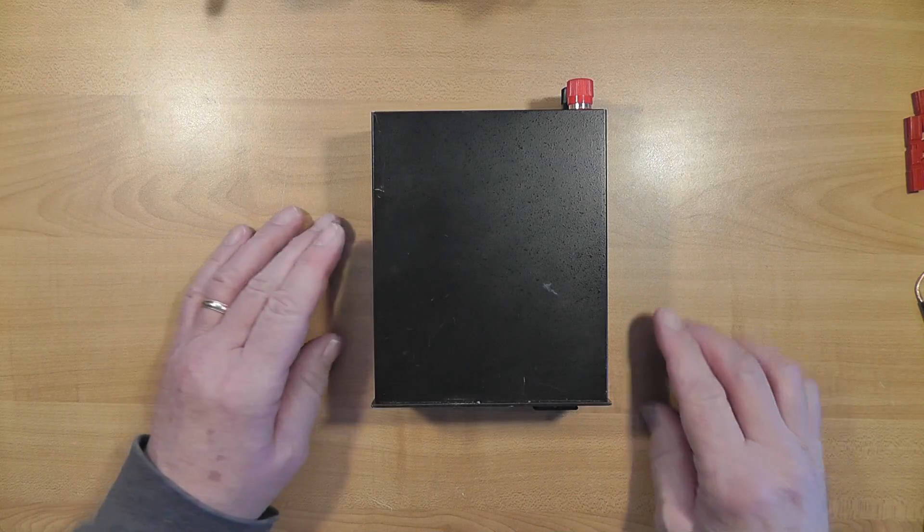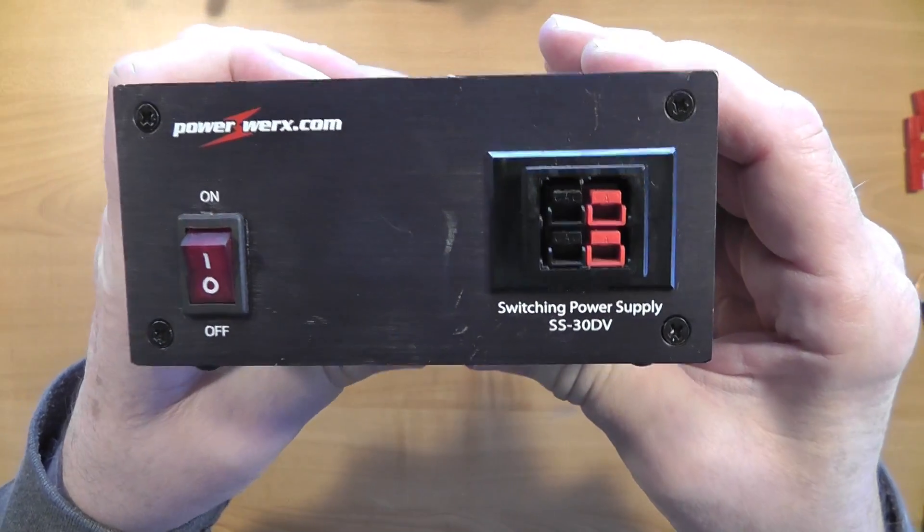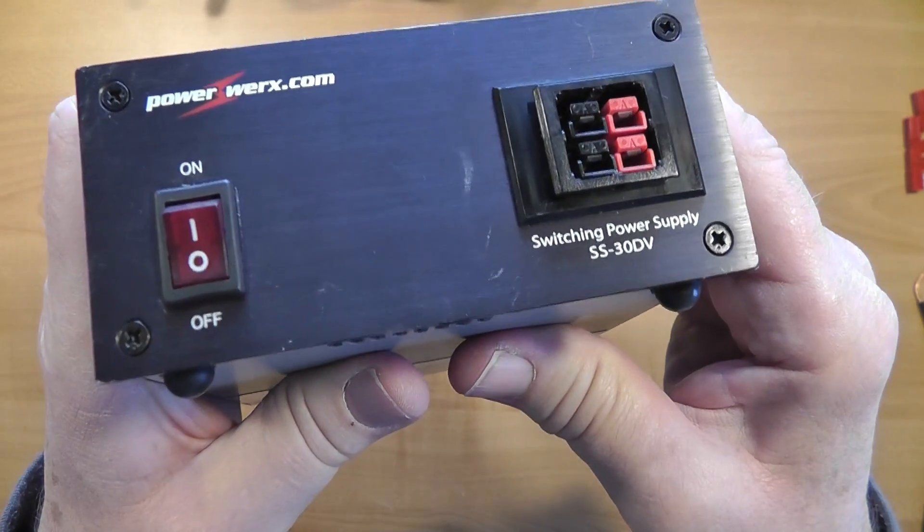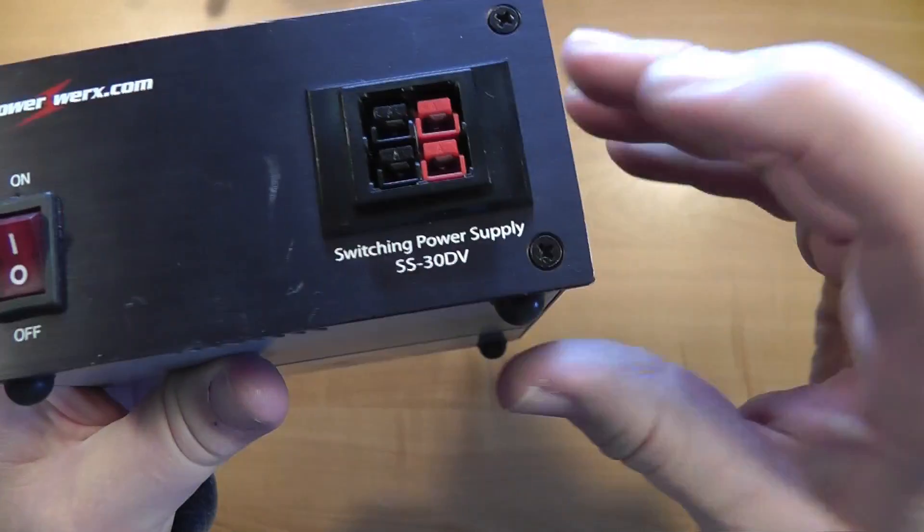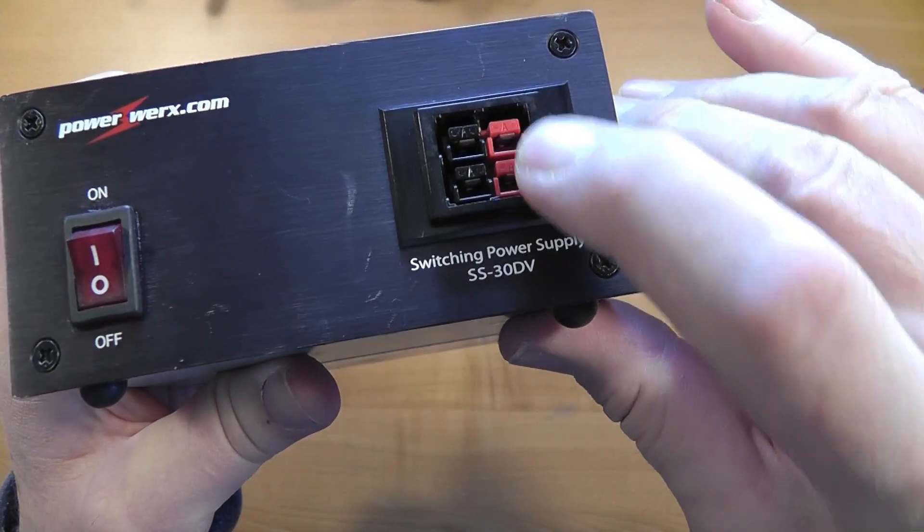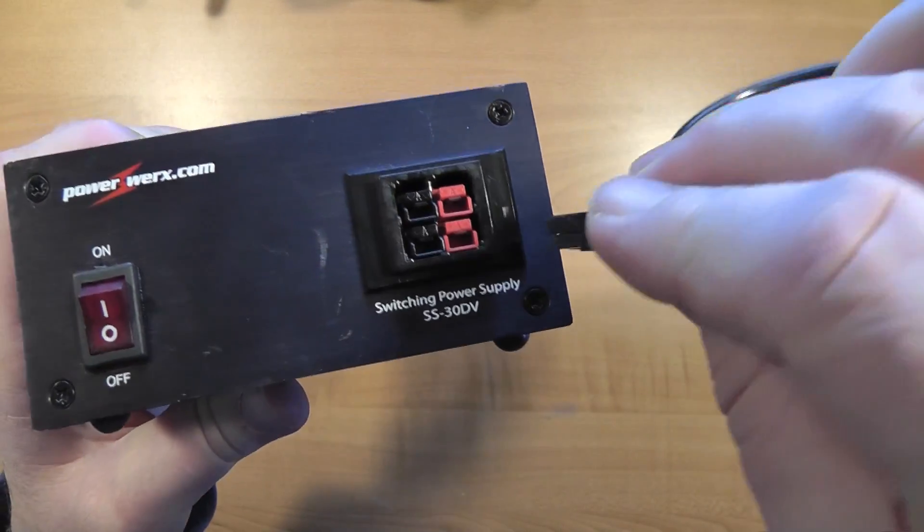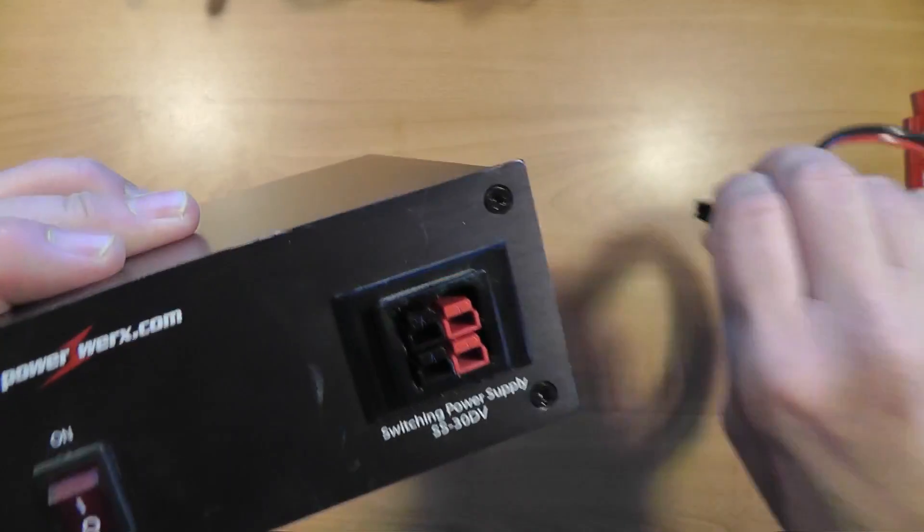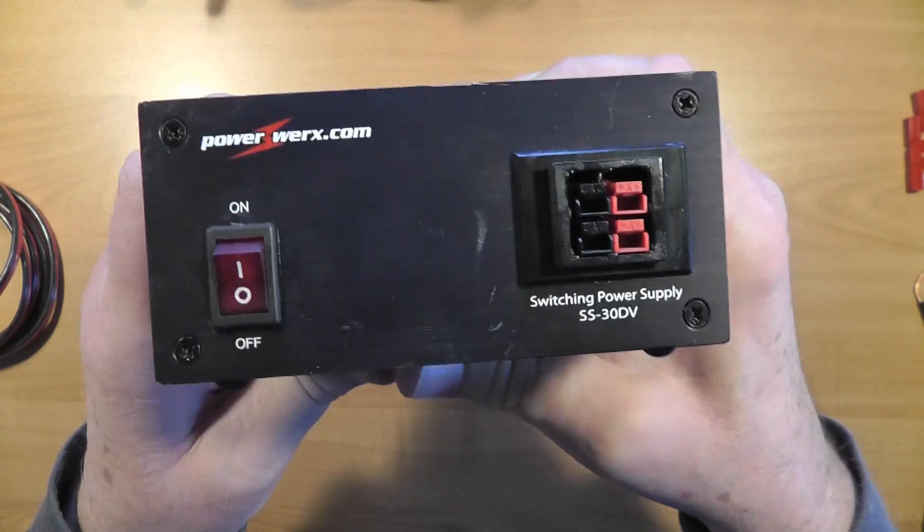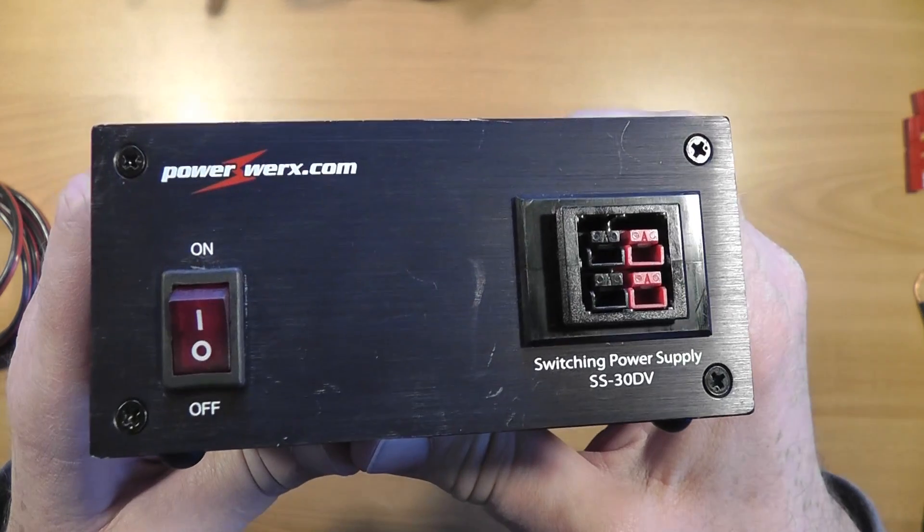Anderson PowerPole connectors look sort of like this. This is a power supply from PowerWorks, a company that's been really pushing the Anderson PowerPole connectors for a long time. These are the connectors right here, and you take a connector like this one right here, and it just inserts right there, very easy, very quick. They'll handle 30 to 45 amps, in other words, everything that you need for a normal HF power supply.